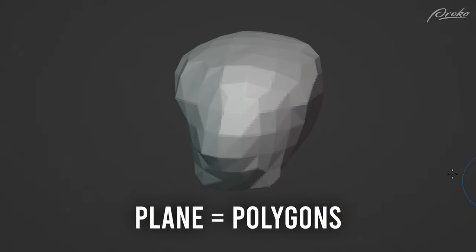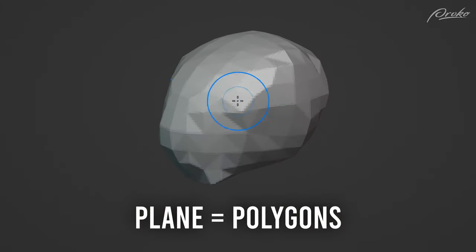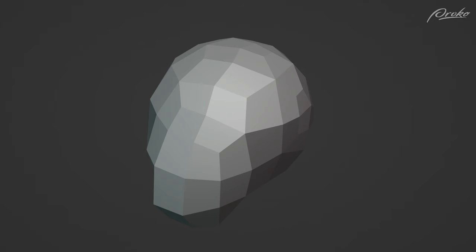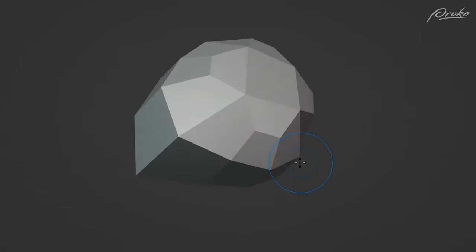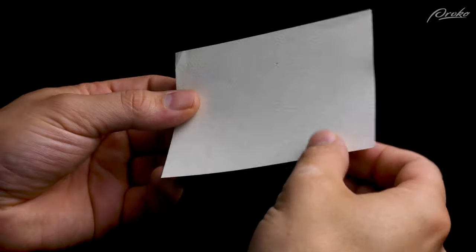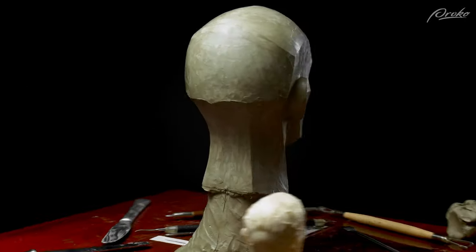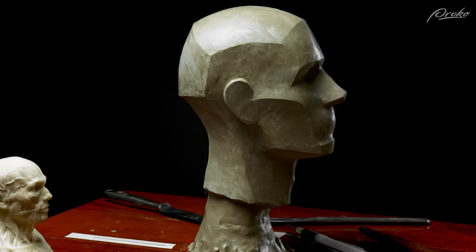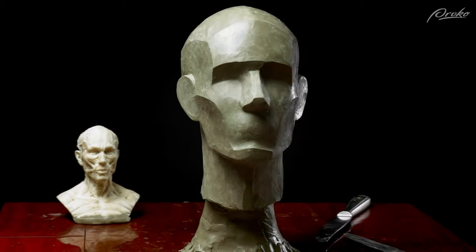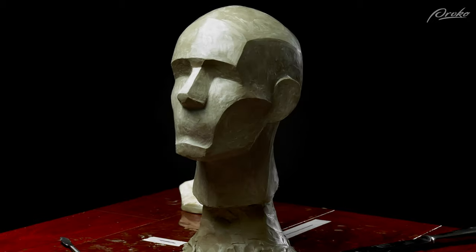In digital sculpting, planes are represented in polygons. The more polygons, the more planes, and the more complex the design can become. When thinking about the planes of the head, we can imagine that we are reducing the polygons more and more. When sculpting, I sometimes like to imagine that planes are able to bend and curve and bow and twist. In reality, this would mean that they're no longer planes because they're no longer a flat surface. But when sculpting, I often find it easier and more natural to create what I like to call dynamic planes, that have more flexibility.